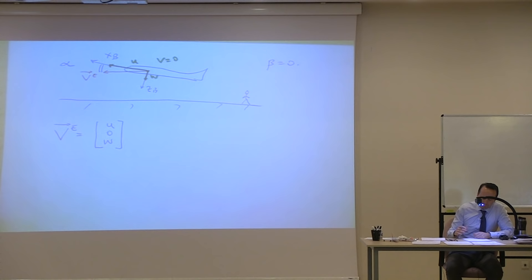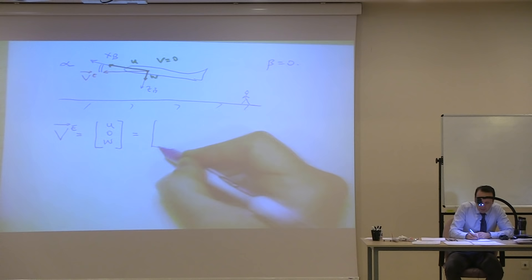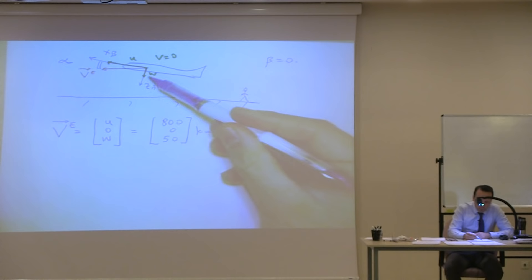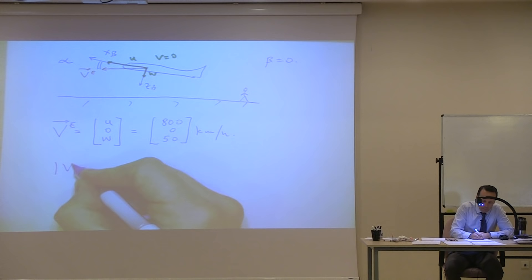This is the velocity of the airplane with respect to someone looking from Earth — with respect to the Earth-fixed frame. Let's give some numbers: 800, zero, 50 kilometers per hour. So there's a 50 component here and 800 here. The full velocity of the airplane is simply sqrt(800² + 50²).